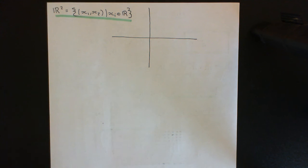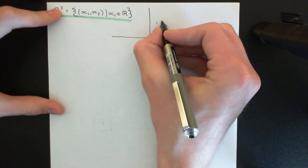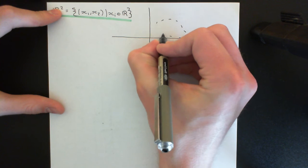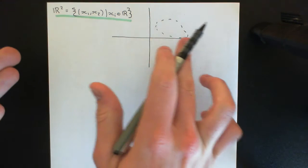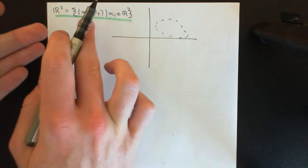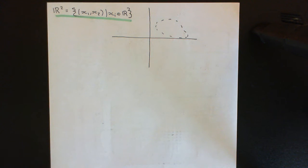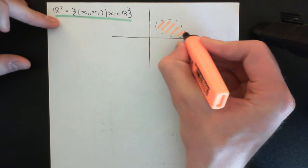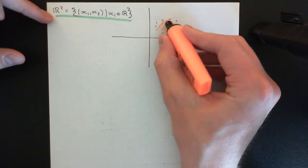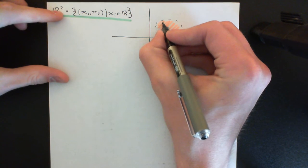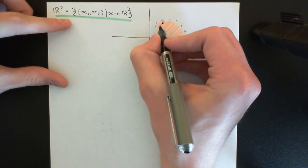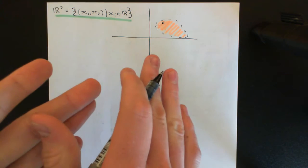You might have seen this before in analysis. These sets are going to look like sets that don't contain their boundary. The way that we draw sets that don't contain their boundary is we draw their boundary dashed. So here — this might be a set, representing a set of R2 points. If we take all of these points and take the symbols that represent them in R2, that will be a subset of R2, and indeed this will be one of those subsets that fulfills the criterion to be in the topology.